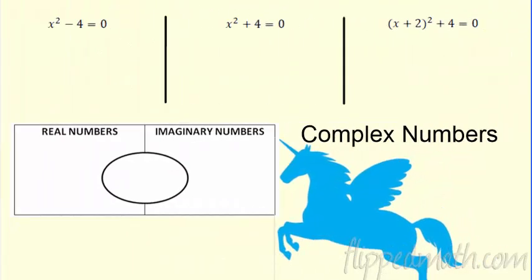For us, we just need to learn how to do operations with complex numbers, and it's just like doing radicals or some of the other things we've looked at. We'll see the connection in how to add, subtract, multiply, and divide these things.